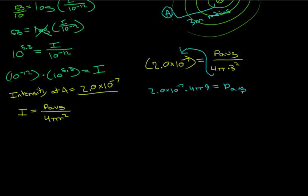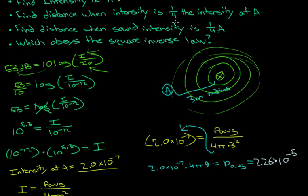Plugging into the calculator: 2.0 times 10 to the negative 7 times 4 pi times 9 — which is 3 squared — equals P-average. That gives us P-average equals 2.26 times 10 to the negative 5 watts. This lets us find out when the intensity is one quarter of our current intensity, and how far away we must be.